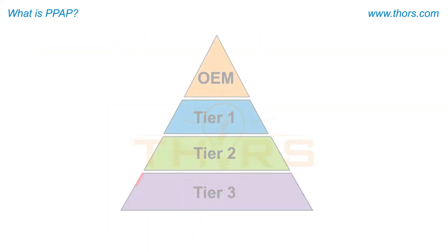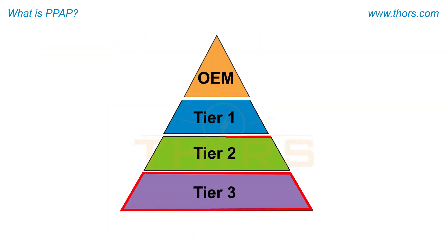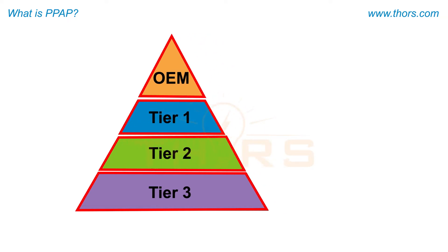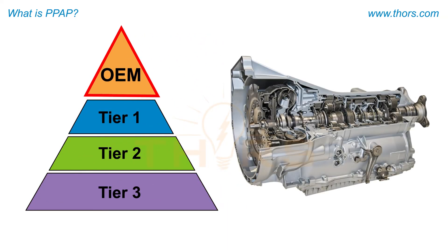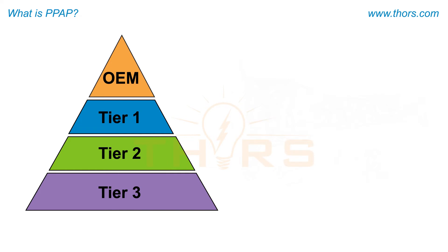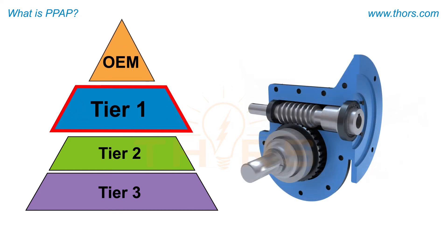The multiple tiers of the automotive supply chain can be explained in the example of a transmission mechanism of a car, where the OEM is the customer who is using the transmission. The supplier manufacturing the gearbox would be considered a Tier 1 supplier to the OEM.